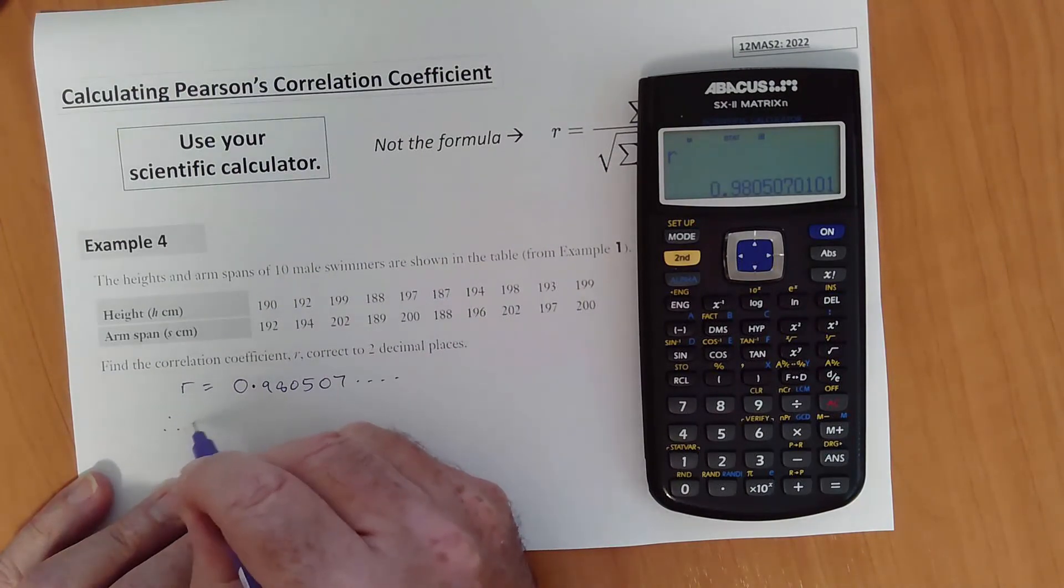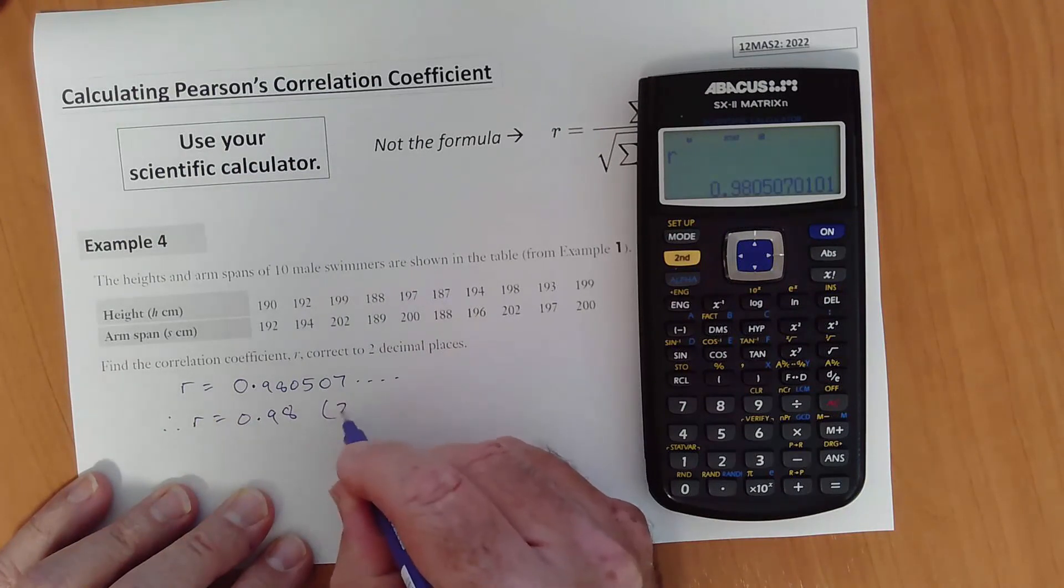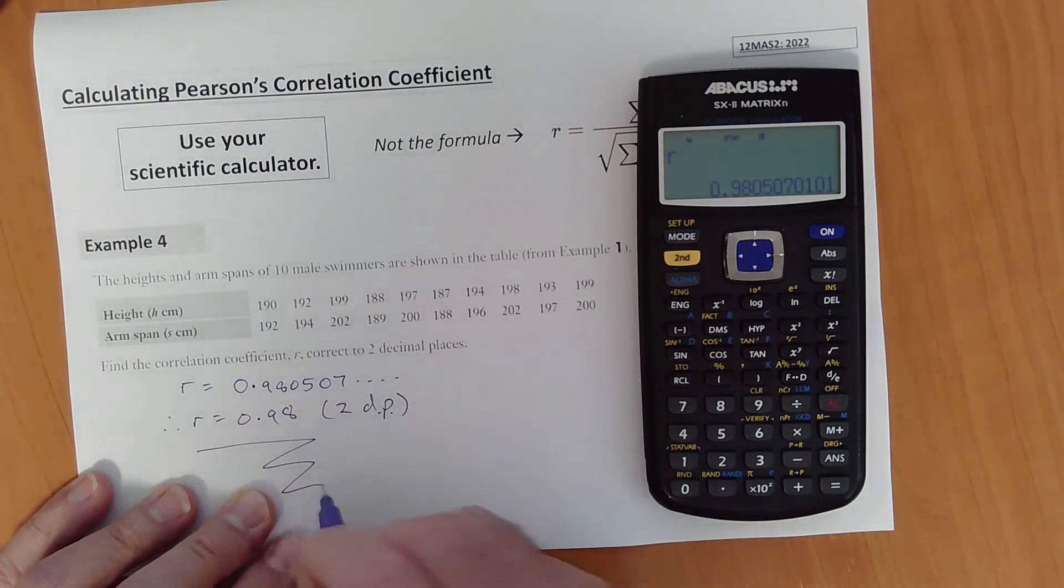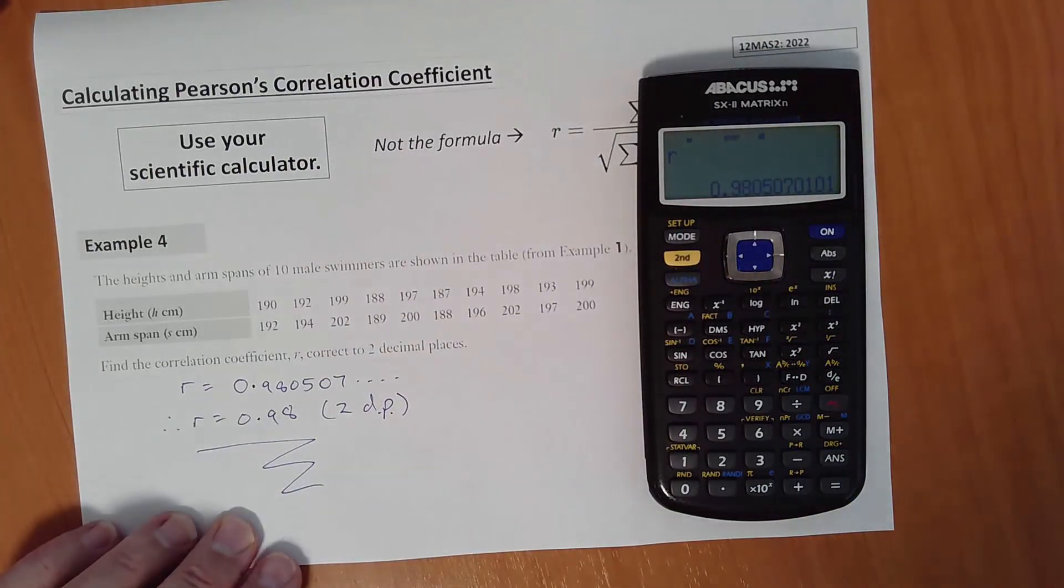Therefore, R equals 0.98, correct to two decimal places. And there you have it. Easy as pi. Thanks for watching.